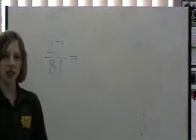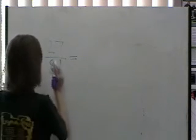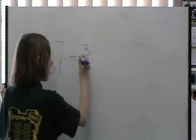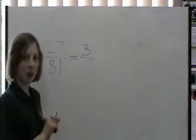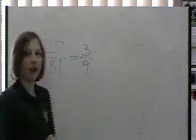What goes into 27 and 81? 9 does. So 9 into 27 goes 3 times, and 9 into 81 goes 9 times. So it's 3 ninths.